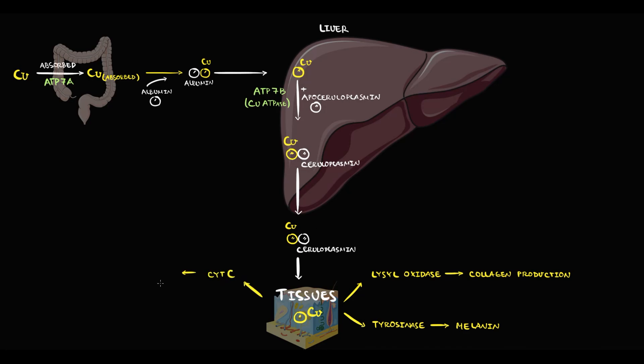Copper is an essential cofactor for cytochrome c oxidase, and we need cytochrome c oxidase to produce ATP in electron transport chain. And last but not least, copper is a cofactor of superoxide dismutase, which is one of the major antioxidants in our organism. So we need copper for elimination of reactive oxygen species.